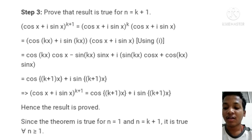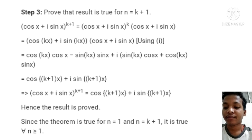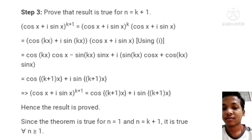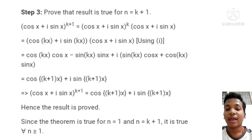This result follows from the trigonometric addition formulas: cos(a+b) equals cos a cos b minus sine a sine b, and sine(a+b) equals sine a cos b plus cos a sin b. Applying these formulas in reverse, we get cos x plus i sine x to the power k+1 equals cos(k+1)x plus i sine(k+1)x. Hence the result is proved. Since the theorem is true for n=1, and if true for n=k it is true for n=k+1, the theorem holds for all positive integers n.